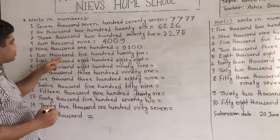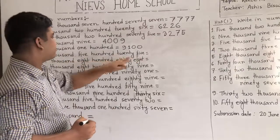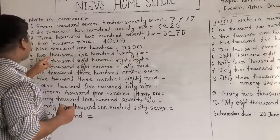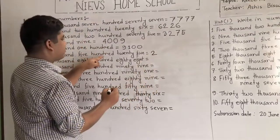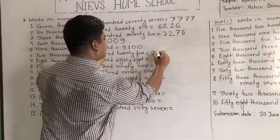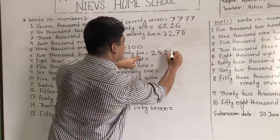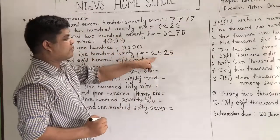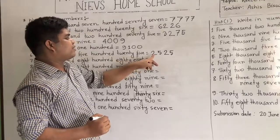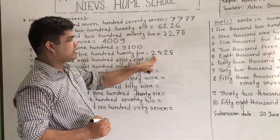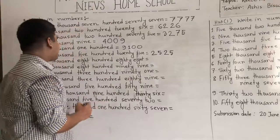Again, 2,525. So we write 2 first as 2,500. Then write 25. It is an interesting number, I think. So we call it 2,525.